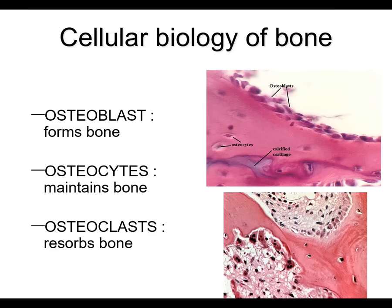A few words about cellular biology. A few cells you should be aware of: the osteoblast, shown here forming bone along the periphery. The osteocytes, which maintain the bone and reside in so-called Howship's lacunae. And then osteoclasts, which resorb bone — these are multi-nucleated, macrophage-type lineage cells that secrete a carbonic anhydrase enzyme to remove bone. You have this balance between osteoblasts and osteoclasts to remodel bone as needed.